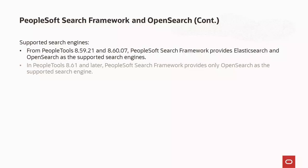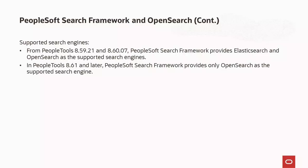From PeopleTools 8.59.21 and 8.60.07, PeopleSoft Search Framework enables customers to use Elasticsearch or OpenSearch as their supported search engine. In PeopleTools 8.61 and later, PeopleSoft Search Framework will only support OpenSearch. In this video, we will talk about how you can seamlessly migrate to OpenSearch in PeopleTools 8.59, 8.60, and 8.61.